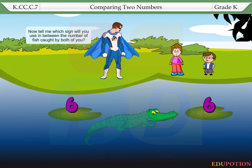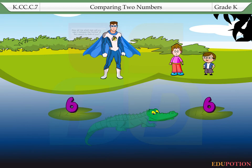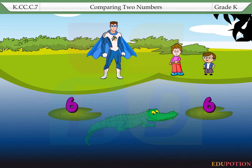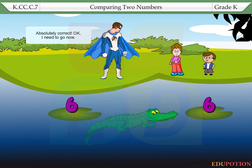Now, tell me, which sign will you use in between the number of fish caught by both of you? The sign of greater than, as my ten fish are greater in number than Max's nine fish. Absolutely correct.